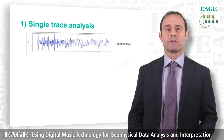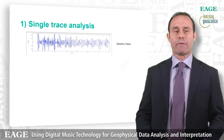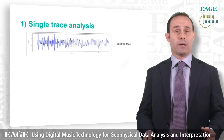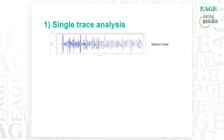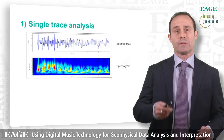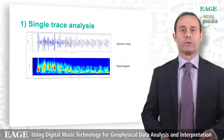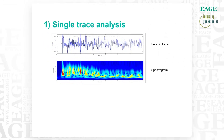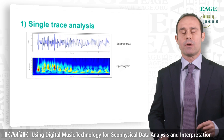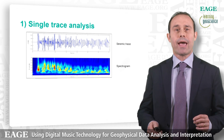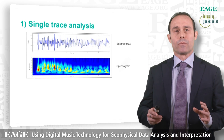Now I would like to show you some examples, starting from the simplest one: a single trace analysis. This is a real seismic trace — on the vertical axis we have amplitude, on the horizontal axis we have travel times. We perform our spectral analysis using a Stockwell transform on this seismic trace and we get our spectrogram. In the second panel, we have frequencies on the vertical axis and travel times on the horizontal axis. Colors represent seismic amplitude: red means high amplitude, blue means low amplitude. Working on this spectrogram, we create our MIDI files, associating sound intensity with seismic amplitude and pitch with frequency.